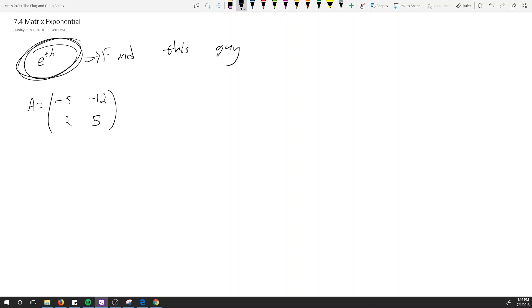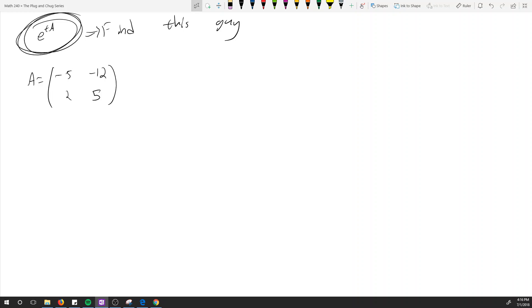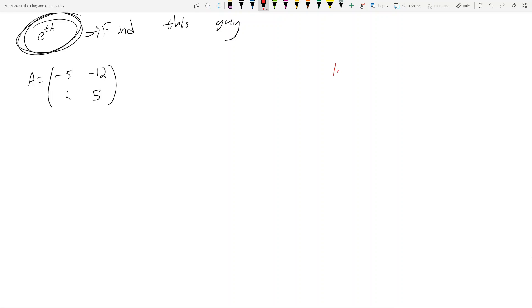So given A, find e to the tA. How do I do that? Well there's a reason why this comes after 7.3 with diagonalization - it's because if the matrix A is diagonalizable this actually ain't so bad. And so for now you just have to pray that your matrix is diagonalizable. What we're going to do then is the theme of this chapter 7 - define your eigenvalues and eigenvectors.